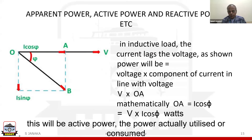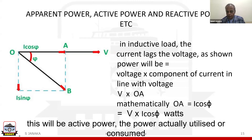In a reactive load, we have got two types. One is called a lagging load — motors, transformers, tube lights, coils — which is an inductive load. In an inductive load, the current lags the voltage. The voltage vector is shown horizontal along the x-axis. The current is shown by phasor OB, which lags behind the voltage by an angle phi, what we call the phase angle.